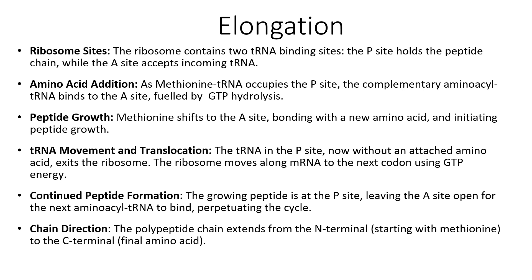There is also tRNA movement and translocation, where the tRNA now in the P site without an attached amino acid exits the ribosome. The ribosome then moves along the messenger RNA to the next codon using GTP energy. The growing peptide remains at the P site, leaving the A site open for the next aminoacyl-tRNA to bind, continuing the cycle. The chain extends from the N-terminal, starting with methionine, to the C-terminal, which is the final amino acid. It's very important to know those terms: N-terminal and C-terminal.